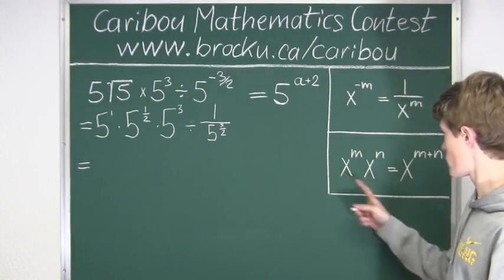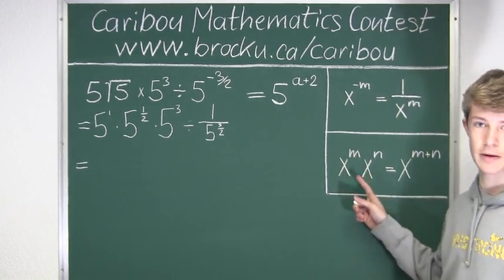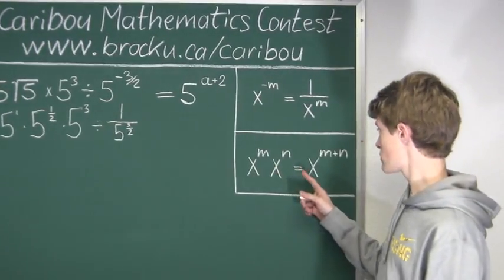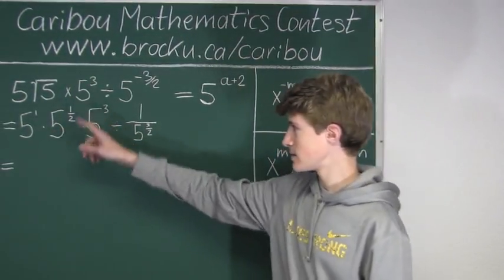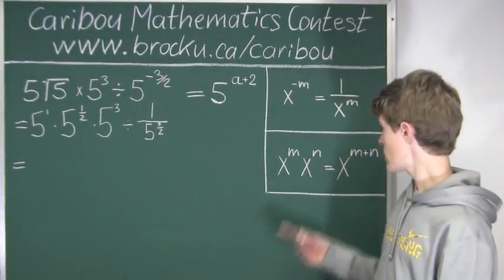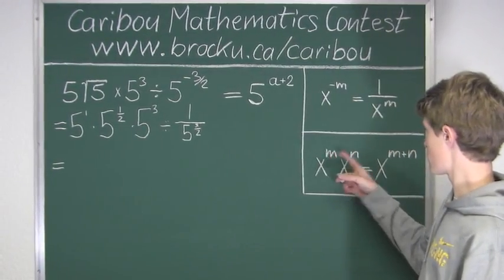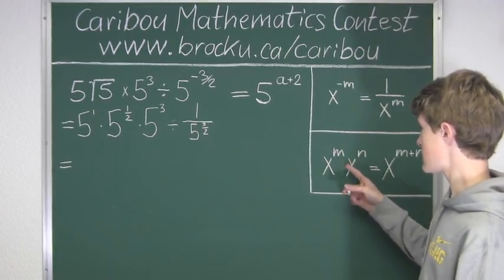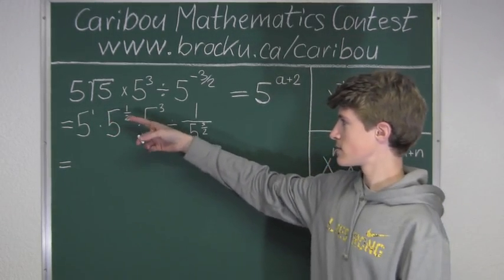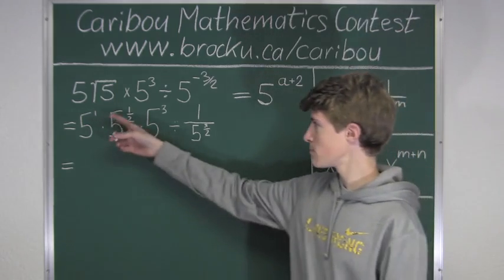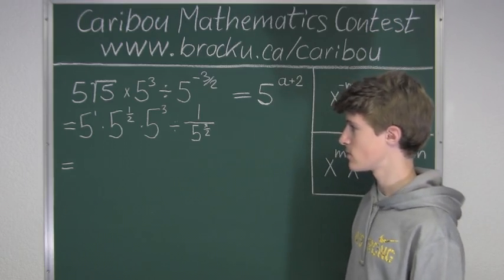Now let's look at this formula down here. We have x to the power of m times x to the power of n equals x to the power of m plus n. Since we already wrote these factors as powers of 5, we can just use x as 5. We must add 1 plus 1 over 2 plus 3. So, 1 plus 3 is 4, and 4 plus 1 half is 4 and 1 half, which is the same as 9 over 2.